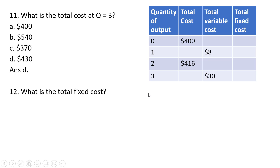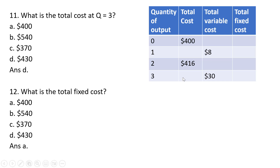Question 12: what is total fixed cost? We already solved that from the previous question — total fixed cost is $400, answer choice A. At zero units of output, total cost equals total fixed cost because total variable cost is zero.